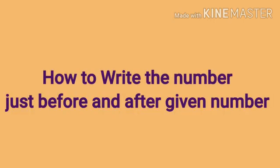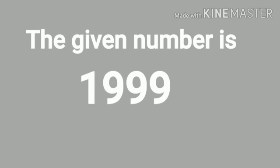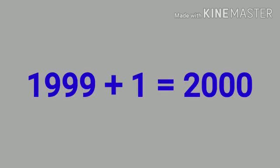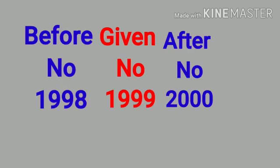Now we learn how to write the number just before and after a given number. The given number is 1999. The number just after any number is greater by 1, and the number just before it is smaller by 1. So if we add 1 to 1999, we get the next number 2000. Also, the number just before 1999 is 1998. Understand?